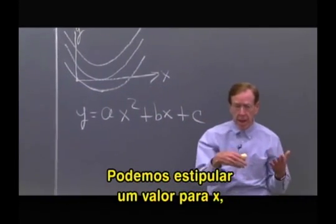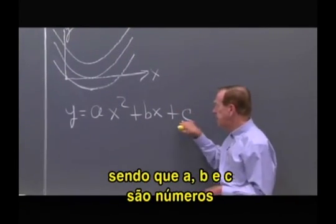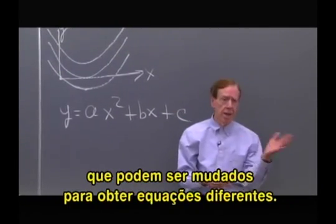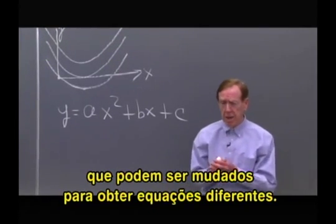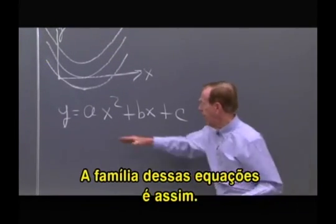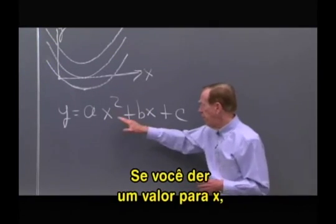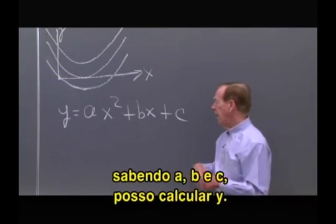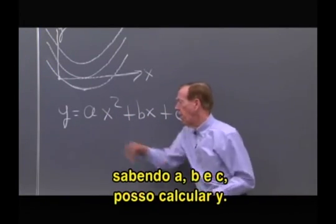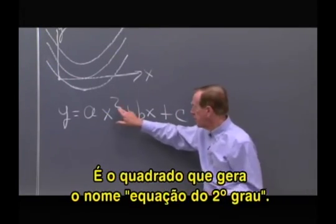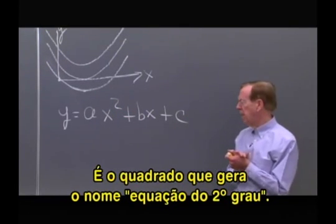If you give me an x — these a, b, and c are numbers, and you'll see I'll change those numbers to get different quadratics. But this is the whole family of quadratics. If you give me an x and I know a, b, and c, then I can figure out y. It's that squaring that makes the word quadratic come into this.